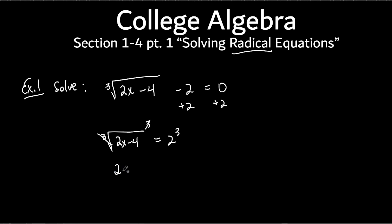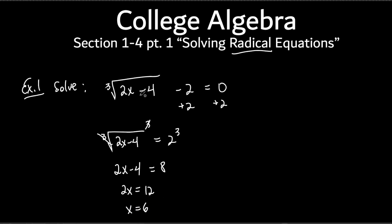We got rid of the cube root, so let's write everything down. 2 cubed is 8, and now it's simple: add 4 to both sides to get 12, divide both sides by 2, and you get x equals 6. But before you circle it — don't circle it yet. We did all the math right, but what we need to do is check to see if this really is our answer.